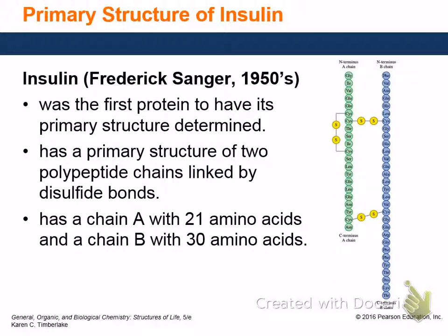A guy named Sanger, in the 1950s, got his Nobel Prize off of doing this. He figured out a way to determine what the primary structure of a protein was, and he did it on insulin. He chose insulin because people were already isolating insulin for diabetics and you could go to the pharmacy and buy it. So the first protein structure that was done was done on insulin just because he could go to the pharmacy and buy it.